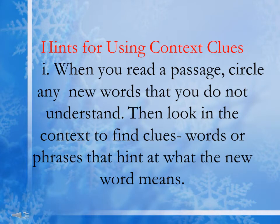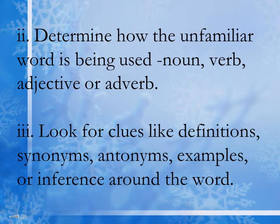Here are some hints for using context clues. First, when you read a passage, circle any new words that you do not understand, then look in the context to find clues — words or phrases that hint at what the new word means. Second, determine how the unfamiliar word is being used — whether it is a noun, verb, adjective, or adverb. Third, look for clues like definitions, synonyms, antonyms, or examples around the word.